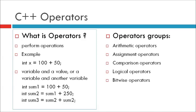For example: integer sum1 equal to 100 plus 50 — there are two values, 100 and 50. Second example: integer sum2 equal to sum1 plus 250 — here sum1 is a variable and 250 is the value. Third example: integer sum3 equal to sum2 plus sum2 — here two variables are used.